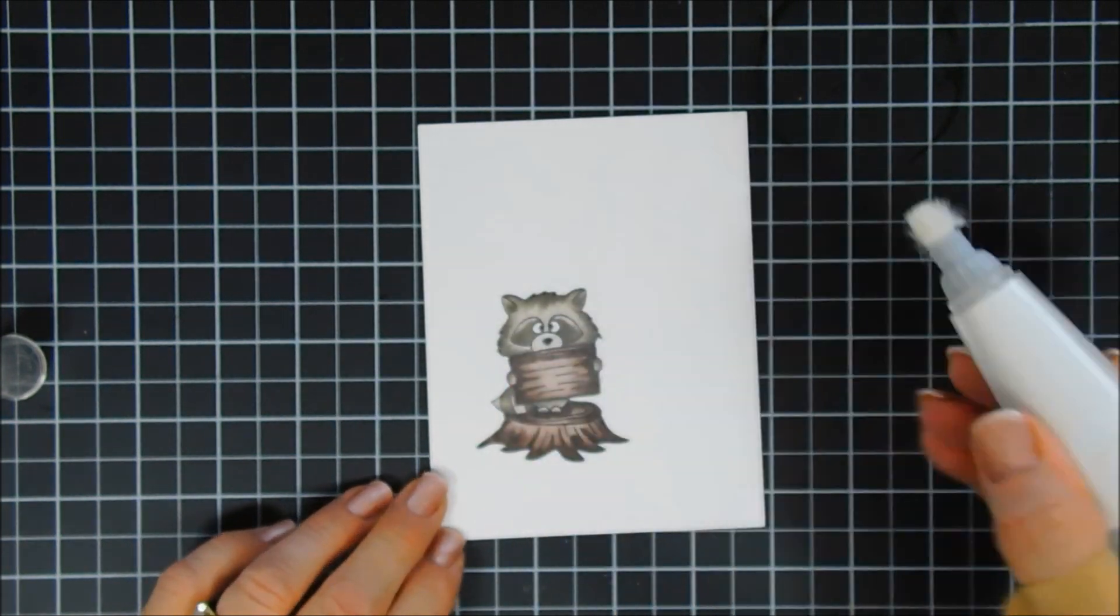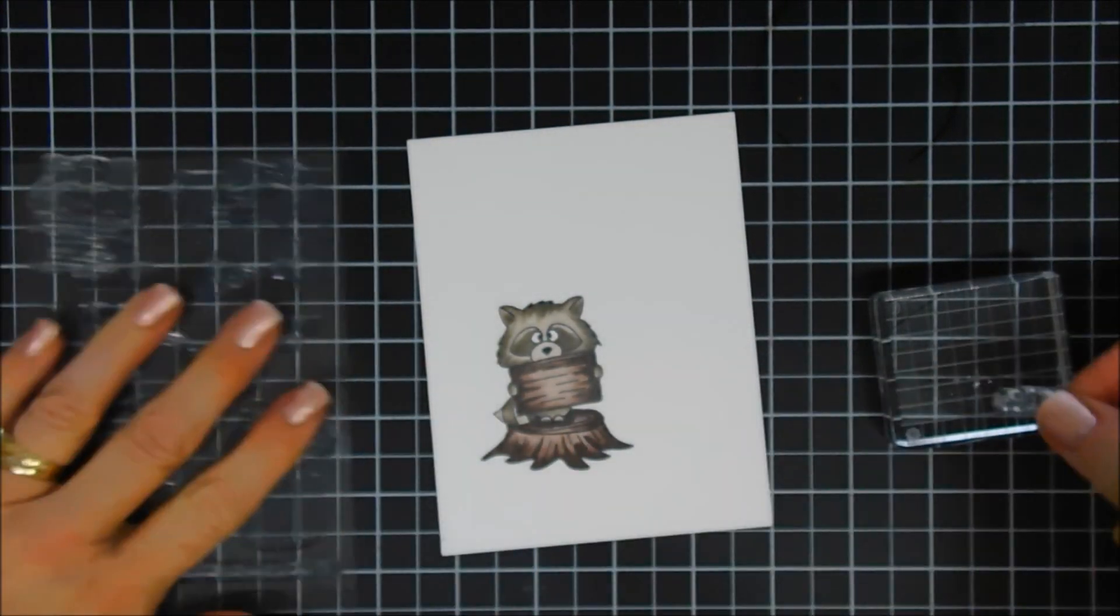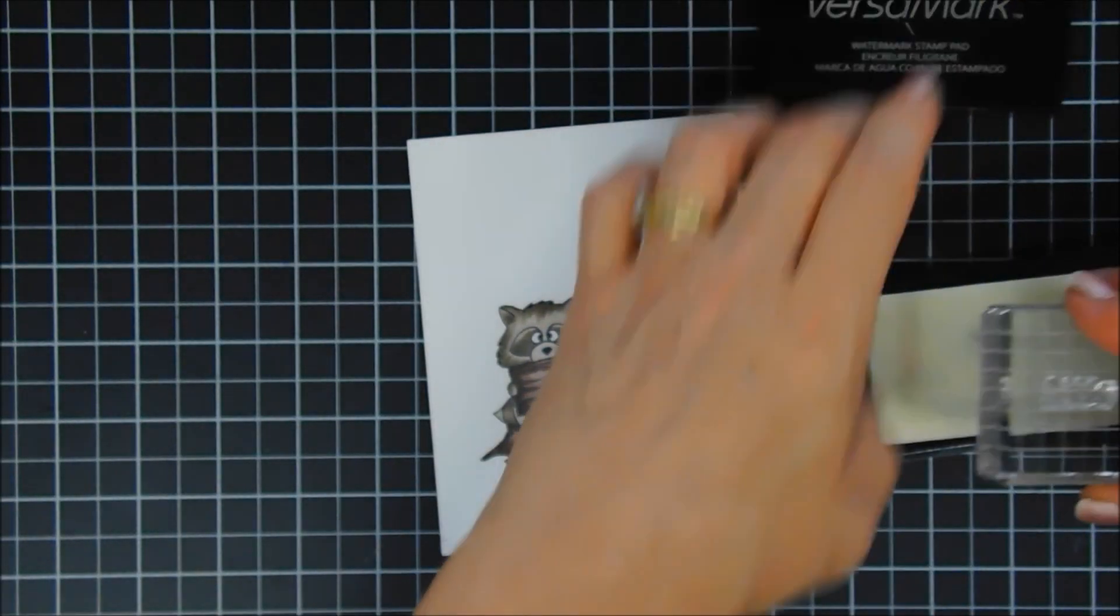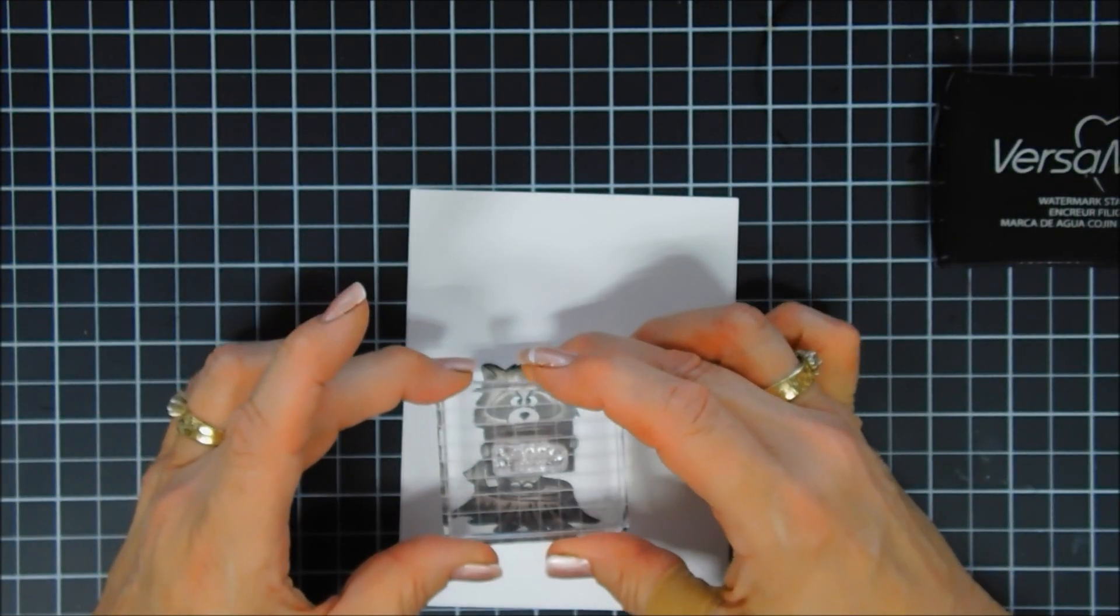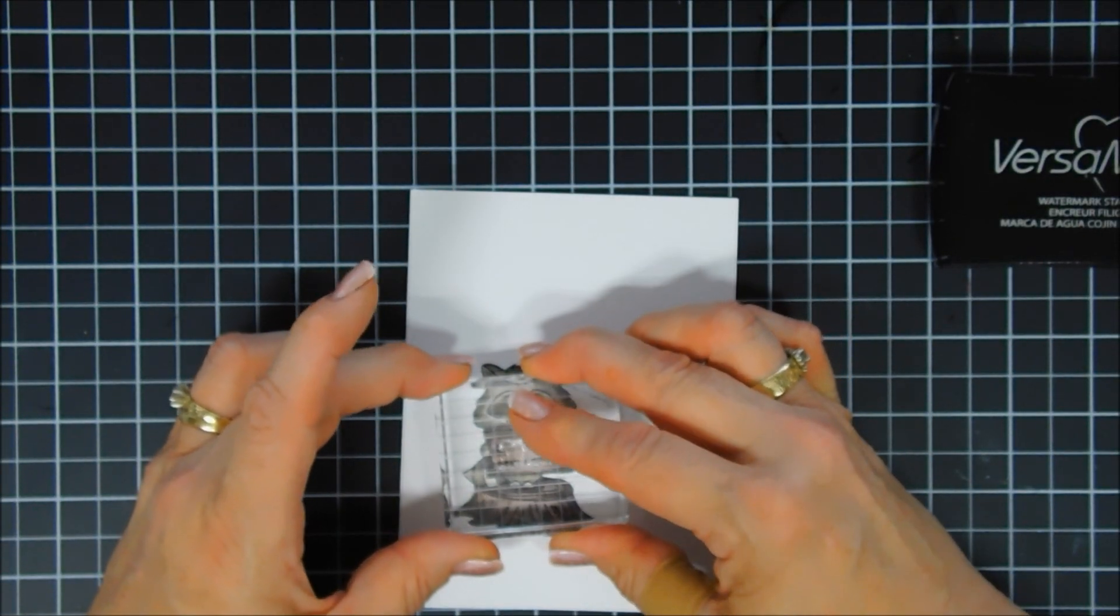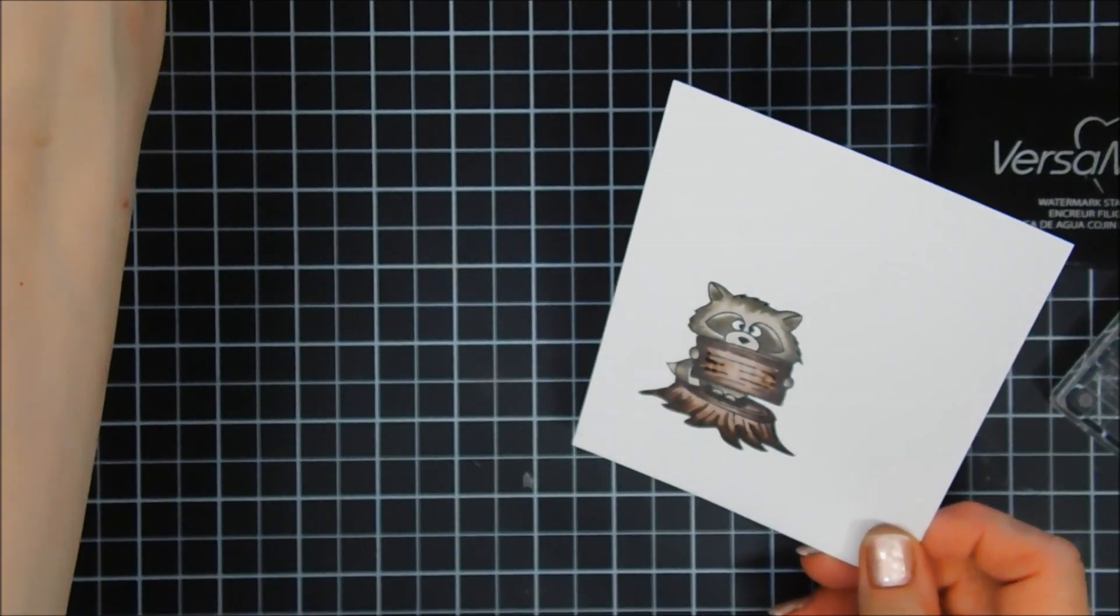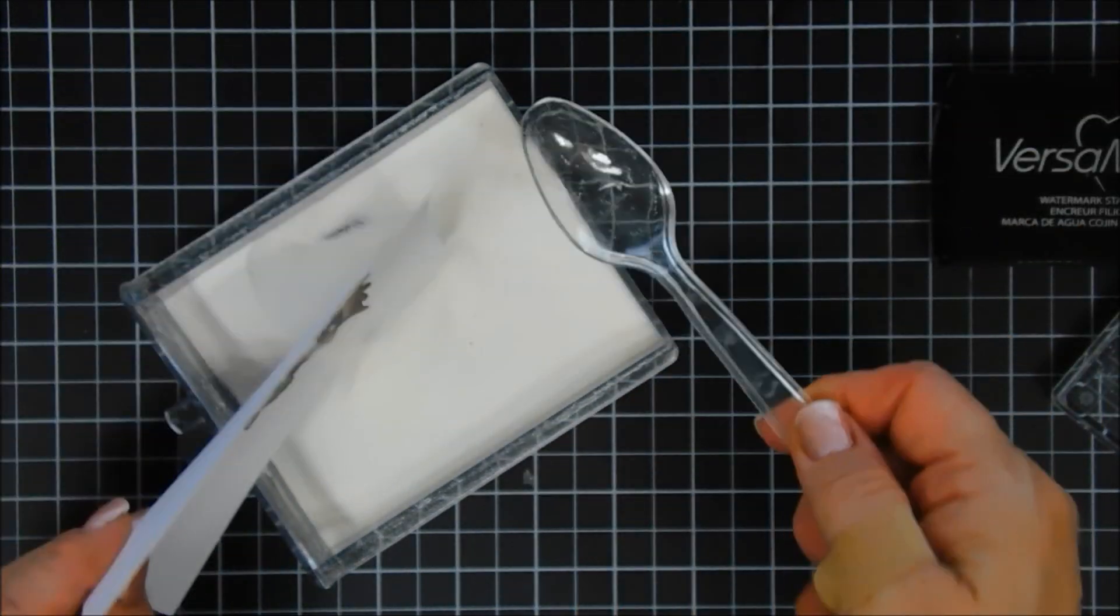So I thought we'd do some heat embossing just so it pops a little bit. So I used my anti-static powder tool right over the sign. I'm going to stamp the sentiment that says 'hello.' So I will use my VersaMark ink, stamp that on the inside again of the sign. And then we're going to go over it with some white embossing powder and then tap off the excess. And then we're going to heat emboss the word 'hello.'